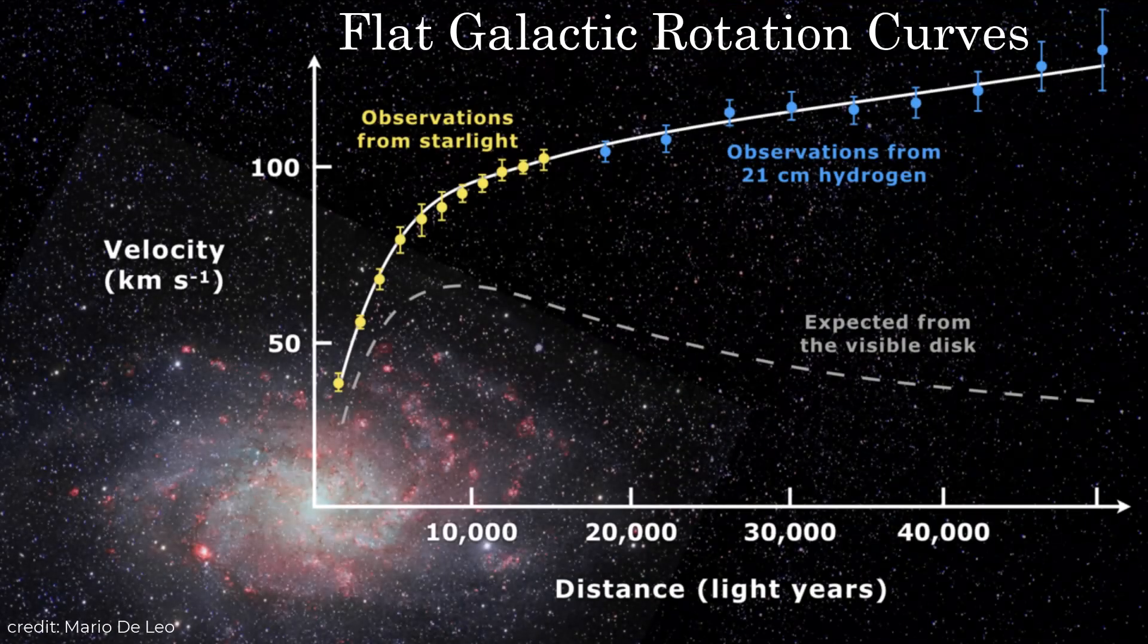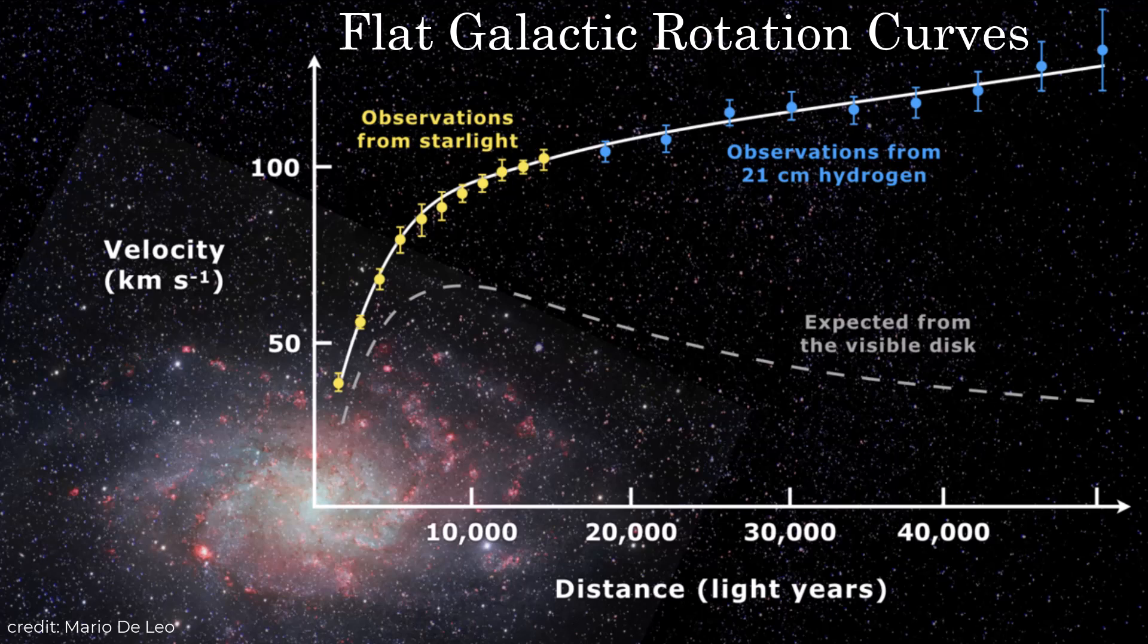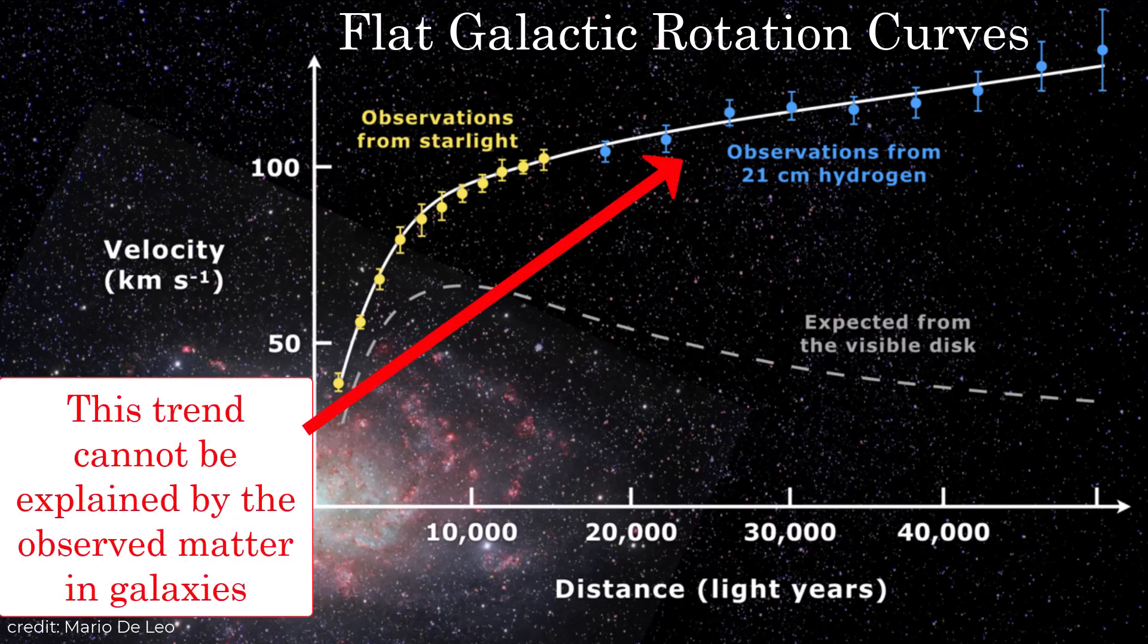One of the main pieces of evidence for dark matter comes from studying the rotation curves of galaxies. This means analyzing the speeds at which stars orbit the galactic center in different galaxies. What's found are flat rotation curves. Out to far distances from the center of a galaxy, every star orbits with essentially the same speed, regardless of its distance to the center.